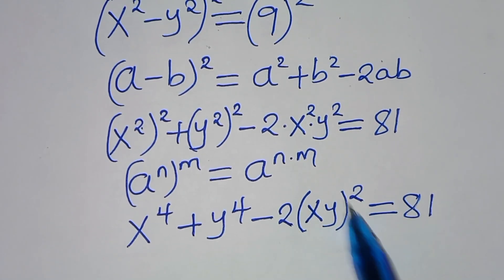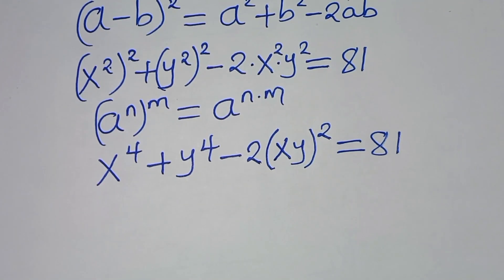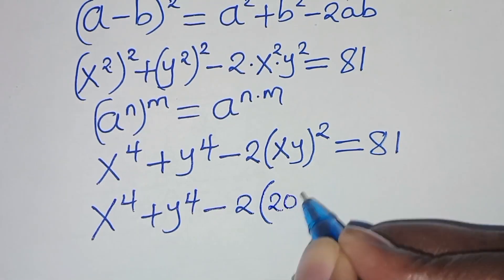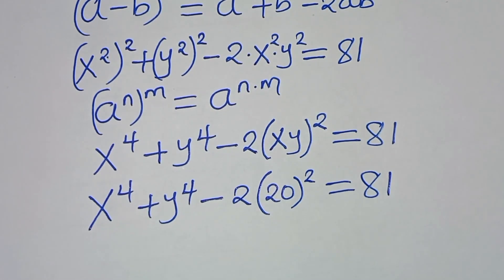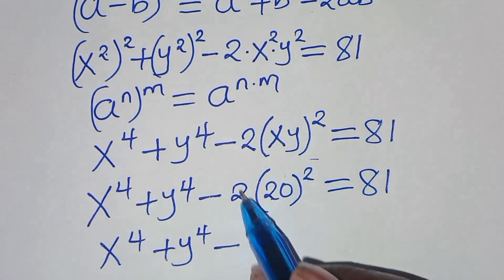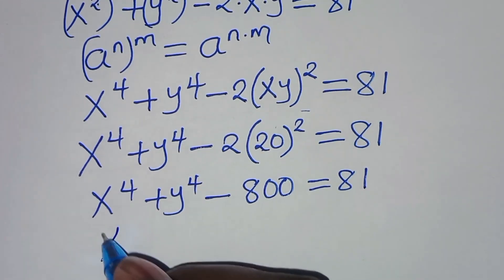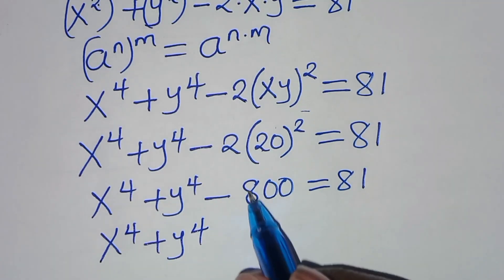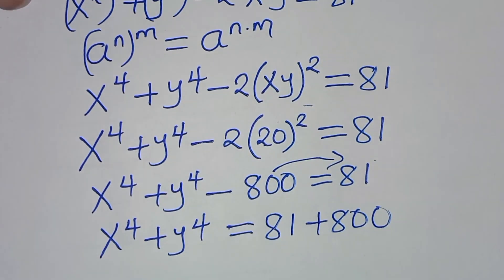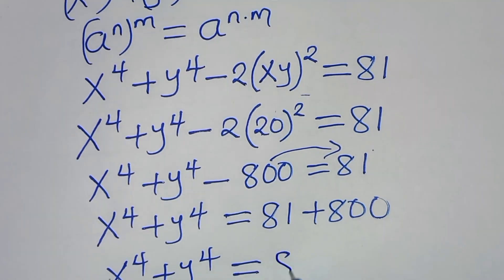Now, xy is what we have in equation 2, so xy equals 20. Substituting this value, we get x to the power 4 plus y to the power 4 minus 2 times 20 squared equals 81. Since 20 squared is 400, times 2 gives 800. So x to the power 4 plus y to the power 4 equals 81 plus 800, which is 881. Let's call this equation 3.